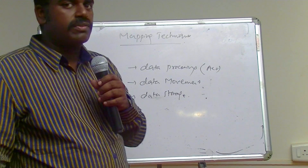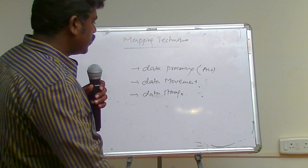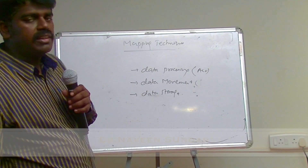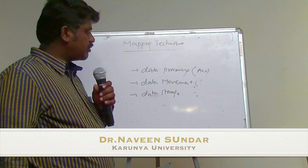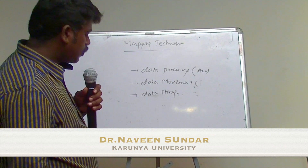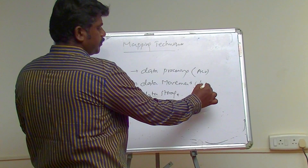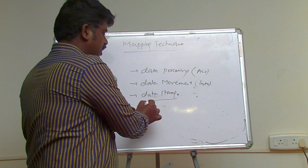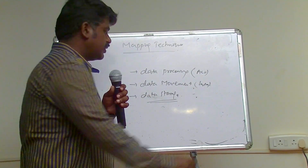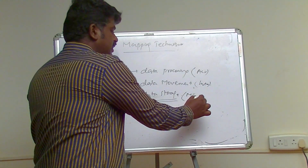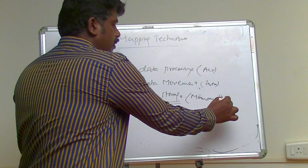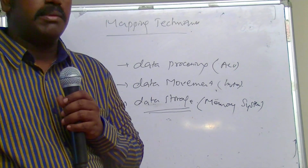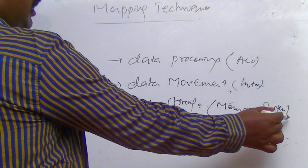For data movement, we will use instructions for moving data from one register to another, or from memory to a register. We use different types of instructions for moving data from one location to another. Finally, data storage is an important computer function — we will concentrate mainly on memory systems and see the different types of memory.